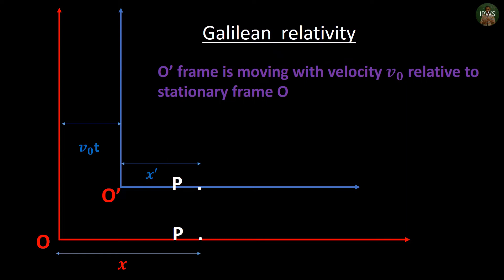In this picture, O' frame is moving with respect to O frame in x direction with a velocity v0, giving x' = x - v0t.